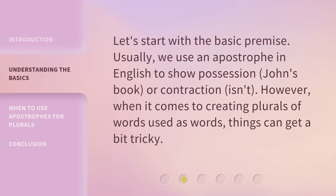Let's start with the basic premise. Usually, we use an apostrophe in English to show possession — John's book — or contraction — isn't. However, when it comes to creating plurals of words used as words, things can get a bit tricky.